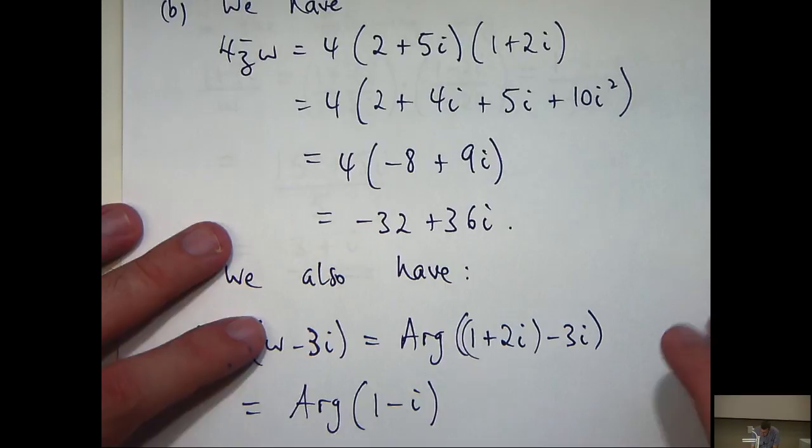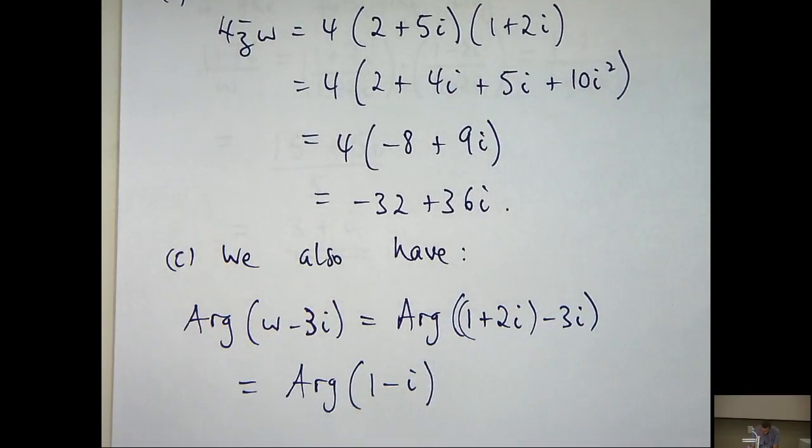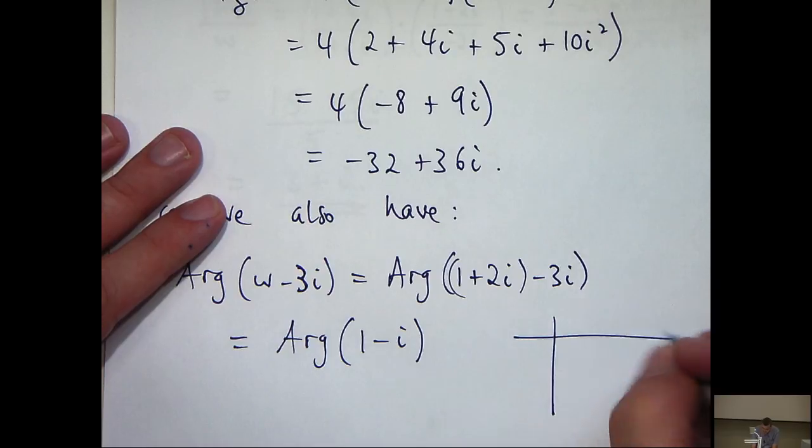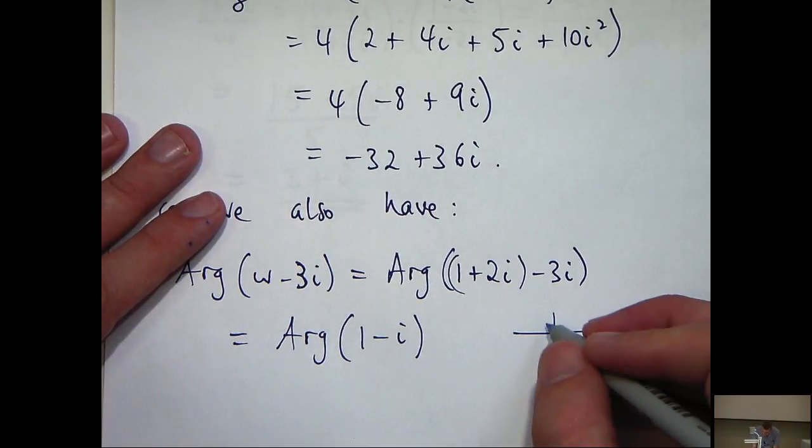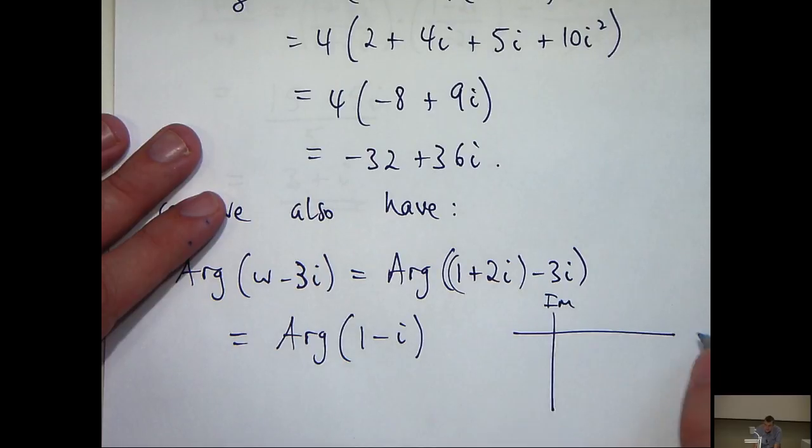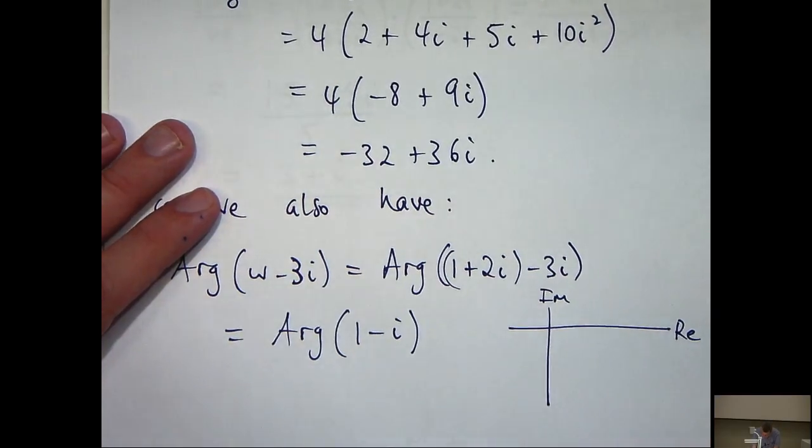So how can we do that? Now the principal argument is just an angle and it has to be strictly greater than minus pi and less than or equal to positive pi. So let's actually, you can do this a number of ways. I'm actually just going to draw this complex number 1 minus i in the complex plane.